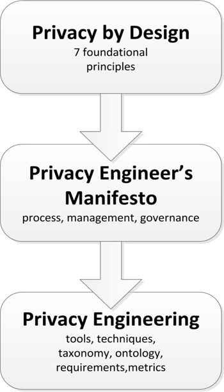Another facet of information system privacy has been the ethical use of such systems, with particular concern on surveillance, big data collection, artificial intelligence, etc. Some members of the privacy and privacy engineering community advocate the idea of ethics engineering or reject the possibility of engineering privacy into systems intended for surveillance.